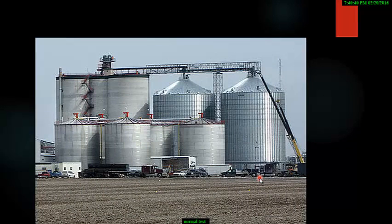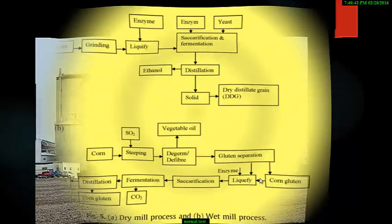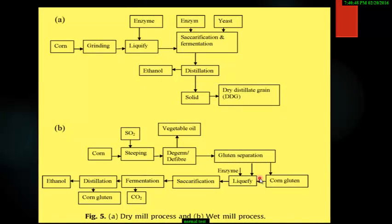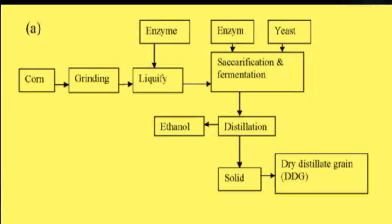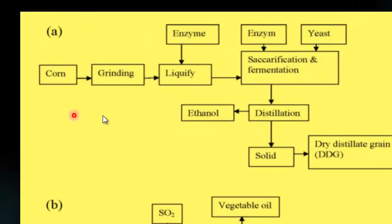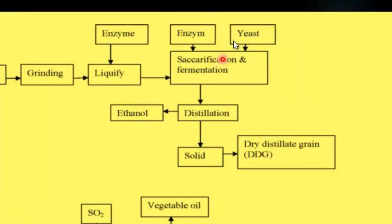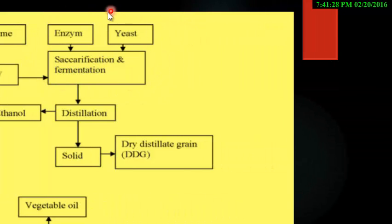Looking at the operational unit for ethanol production in the US: there are two different milling processes — dry milling and wet milling. Dry milling is most favorable and economical for large-scale ethanol production from corn. In dry milling, grinding is a critical step, and the ground corn powder undergoes enzymatic liquefaction by addition of Bacillus subtilis.